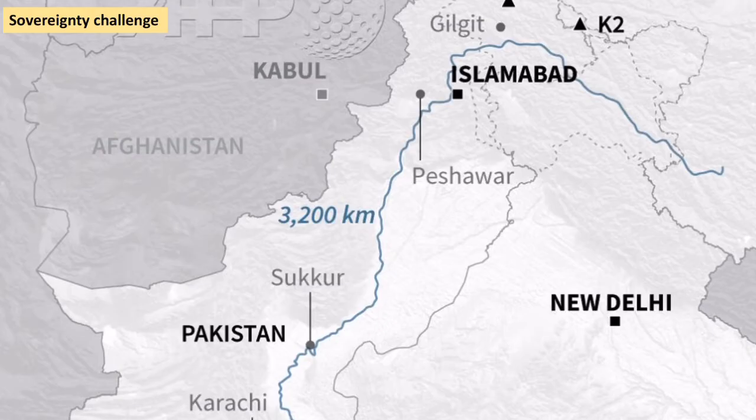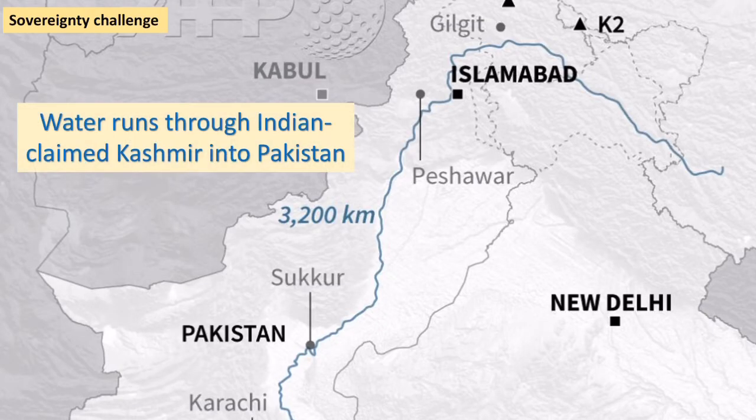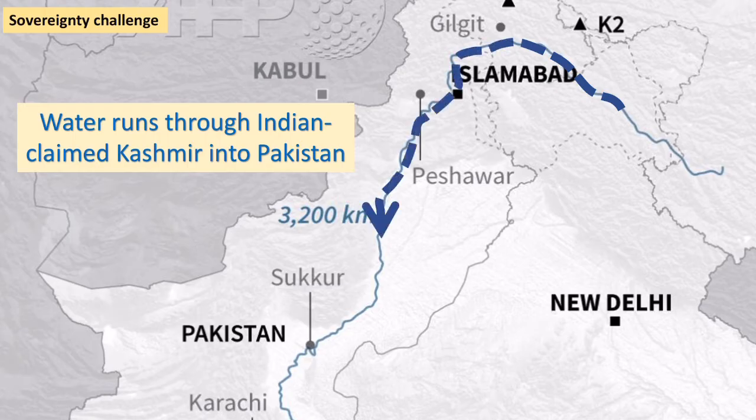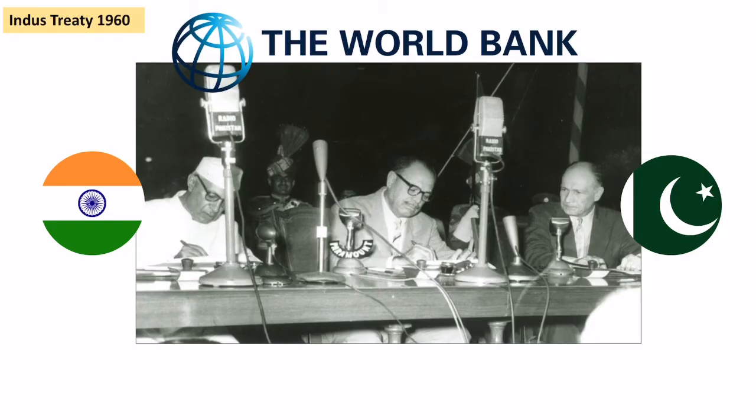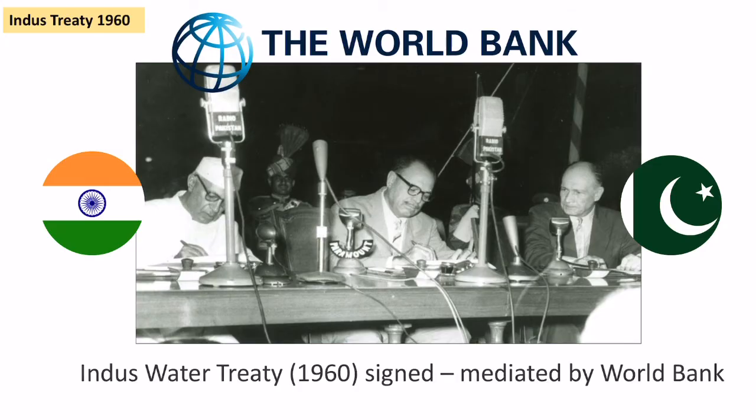One of the biggest issues in terms of the relationship between Pakistan and India over water is the fact that the water that often comes to Pakistan actually runs through India first. It goes through the Kashmir region and then ends up in Pakistan. They decided to do something about this and signed a treaty mediated by the World Bank in 1960, agreeing how they would use the water in this region.